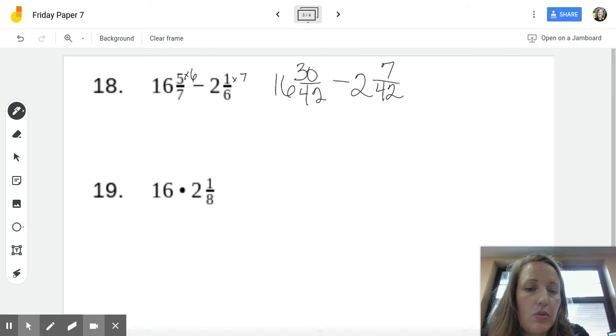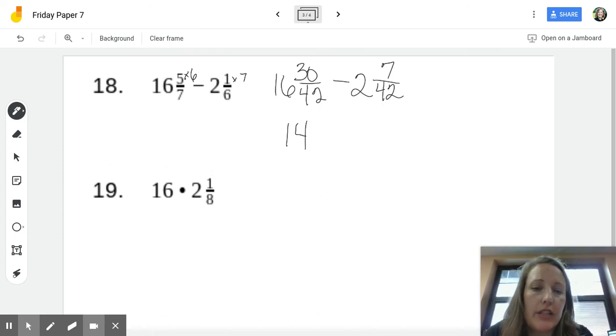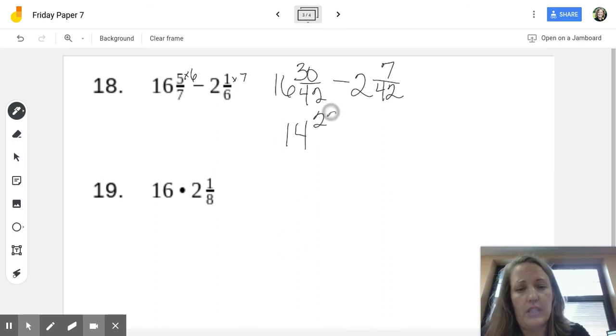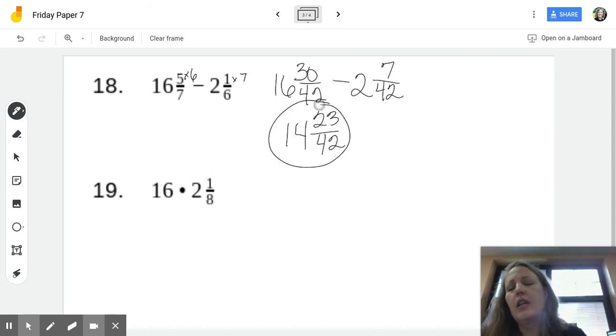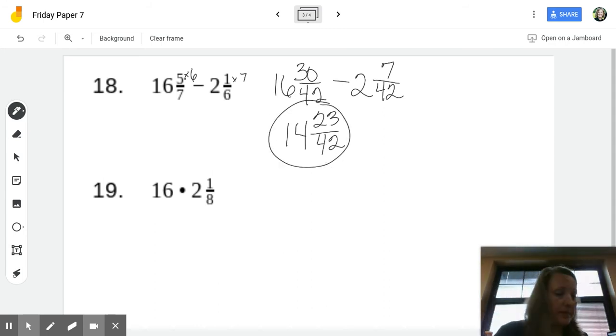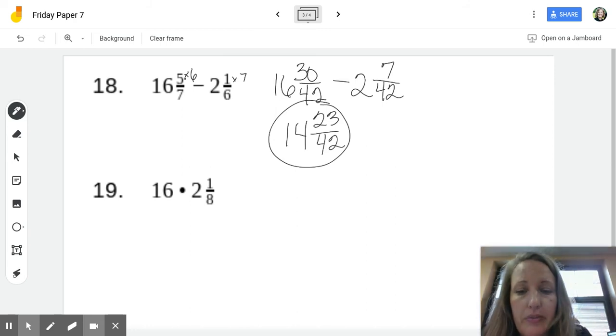So let's go ahead and subtract the whole numbers. 16 minus 2 is 14. 30 minus 7, 30. Minus 5 is 25. 24, 23. 14 and 23 42nds. Now, 23 is prime, so it has no factors other than itself and 1. And 42 is not divisible by 23. So that's my final answer, simplified.